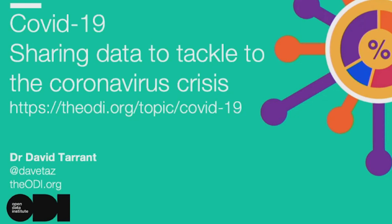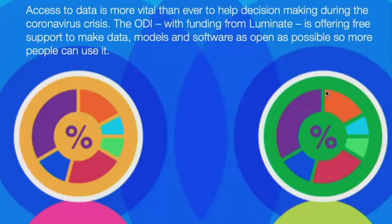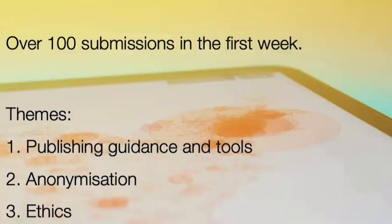With our project, we got a little bit of funding through Luminate, so I want to talk through what we've been doing with that and how we've been trying to help people. What I'm going to talk about here is mostly on the link on this slide — OEIHQ.org/topic/COVID-19 — where everything is. When we started the project, the idea was helping people get access to data to help with decision-making during the crisis. Part of the funding gives us scope to help people as a support organisation to make models, data models and software as open as possible. Those are our three main focuses.